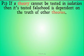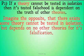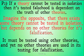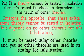Next up, premise 2: if a theory cannot be tested in isolation, then its tested falsehood is dependent on the truth of other theories. To me, this just seems to be an understanding of our definitions. Imagine the opposite — that there exists some theory that cannot be tested in isolation but depends on no other theories for its falsification. In other words, it must be tested using other theories and yet no other theories are used in its testing for falsification. That seems to be just a complete contradiction.